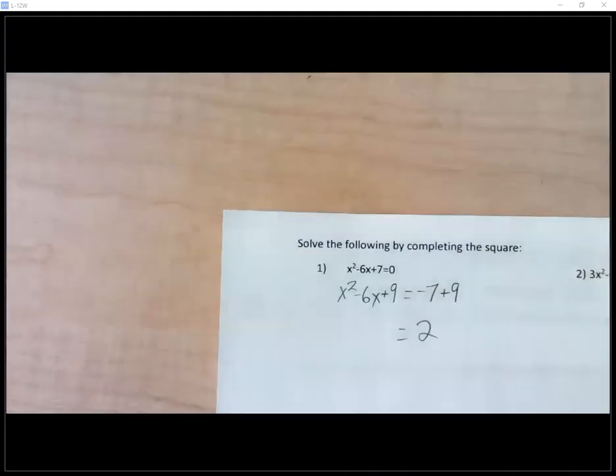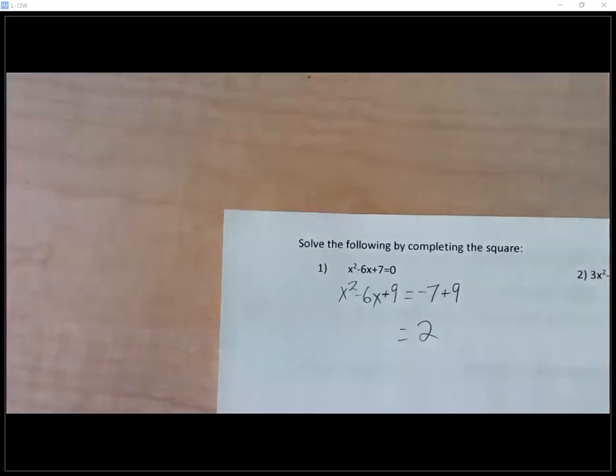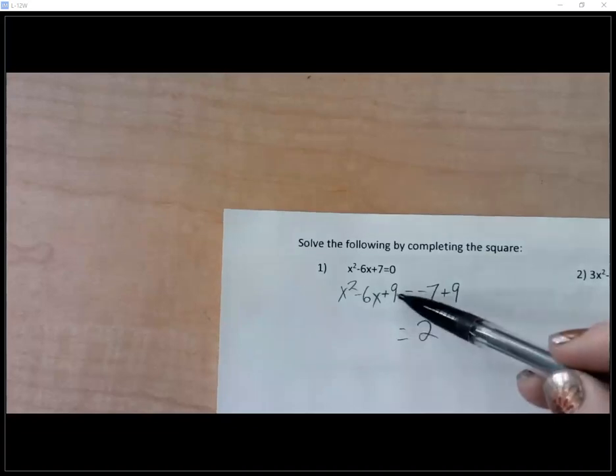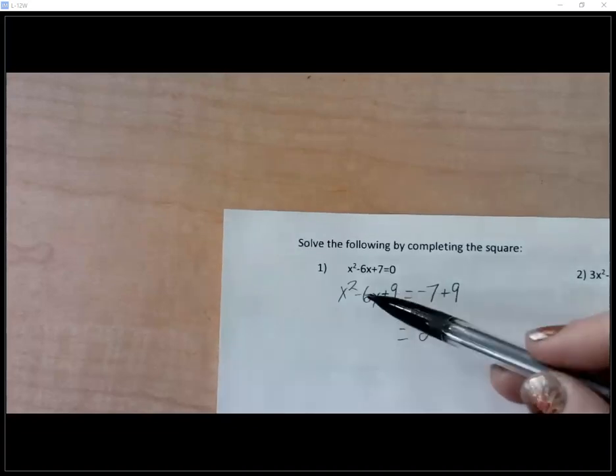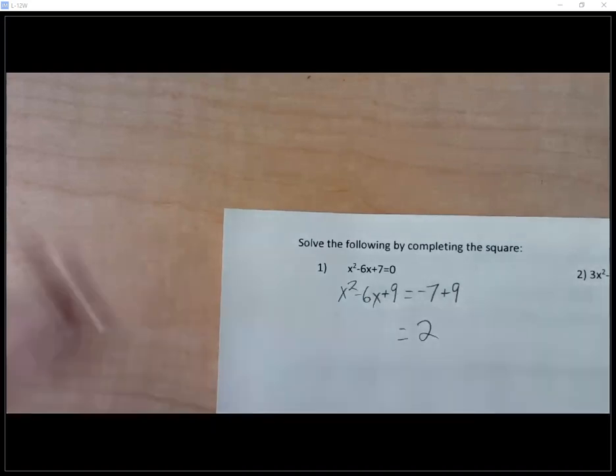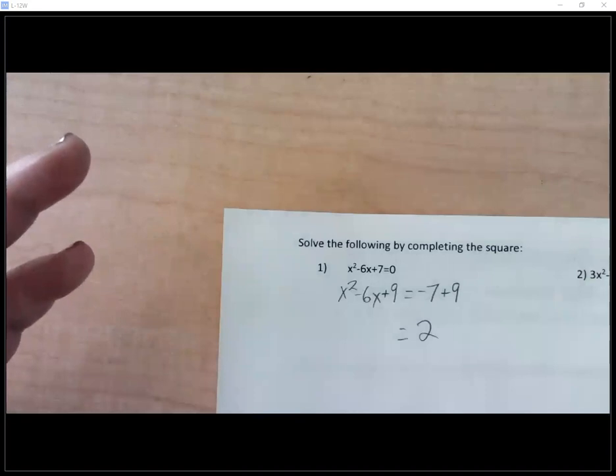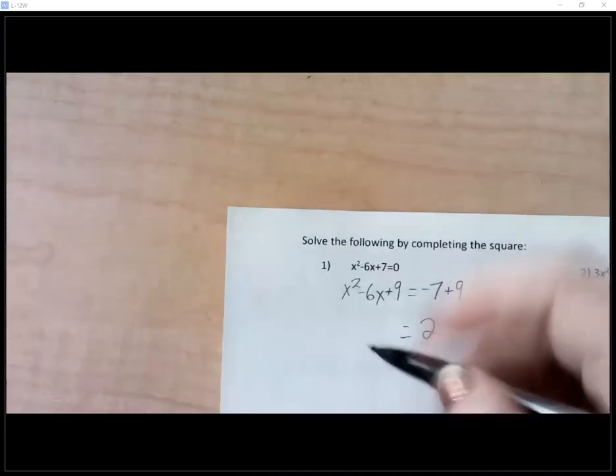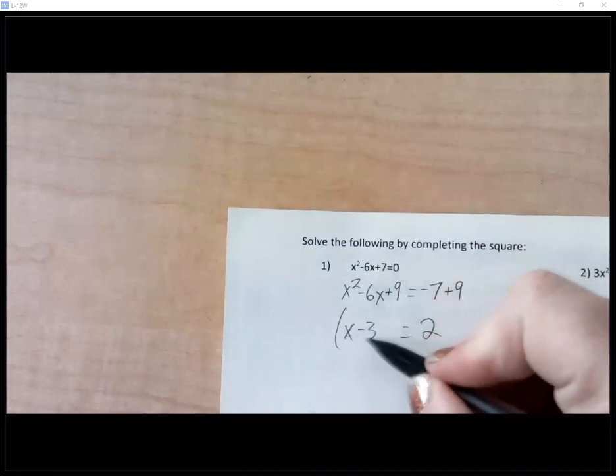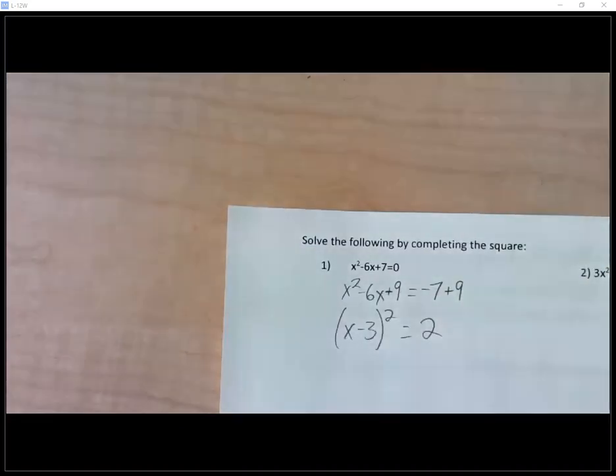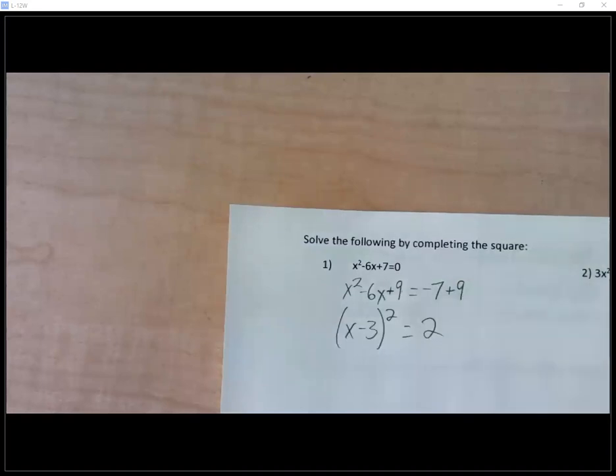I'm allowed to do this because whatever you do to one side, you do the other. I added nine to both sides. On the right, I can just add negative nine and seven, that's just a two. But on the left, you try and factor that. This is where it turns into magic, because there are always going to be factors of nine that add to be negative six. And they just so happen to be negative three and negative three. But instead of writing it two times, I just write it as x minus three squared.